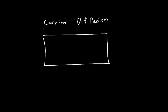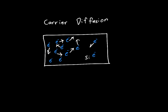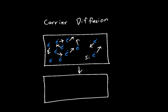If we've got a block of silicon — but it could be a beaker of water or really anything at all — and we've got a bunch of electrons on the left, and not so many on the right, we know that just because these electrons are moving around randomly with a thermal velocity, eventually this system will equilibrate into a state where the electrons are roughly equally distributed. That process is called diffusion.